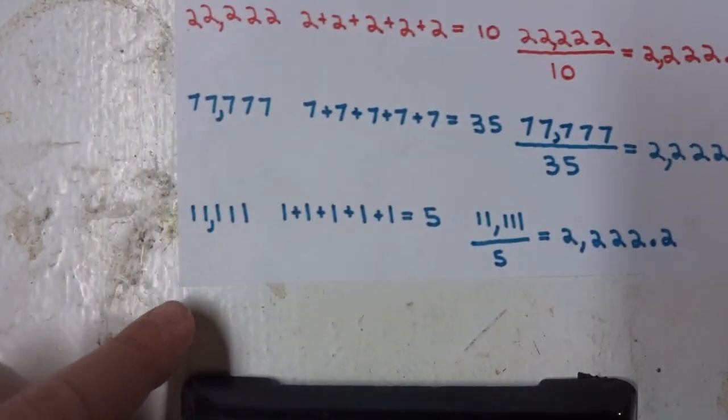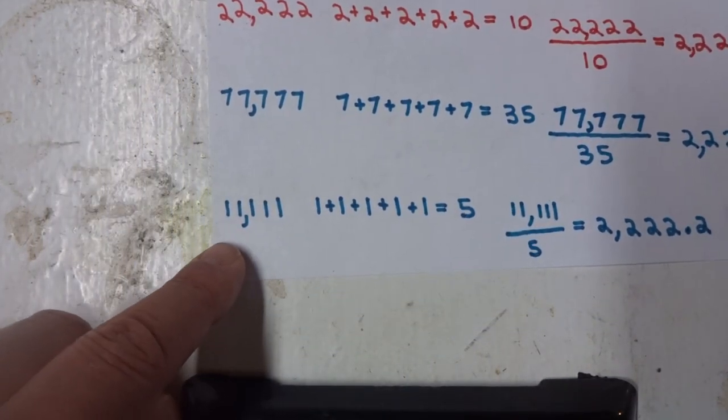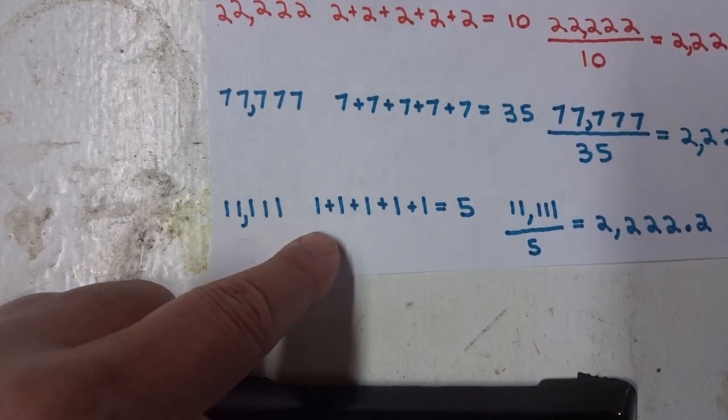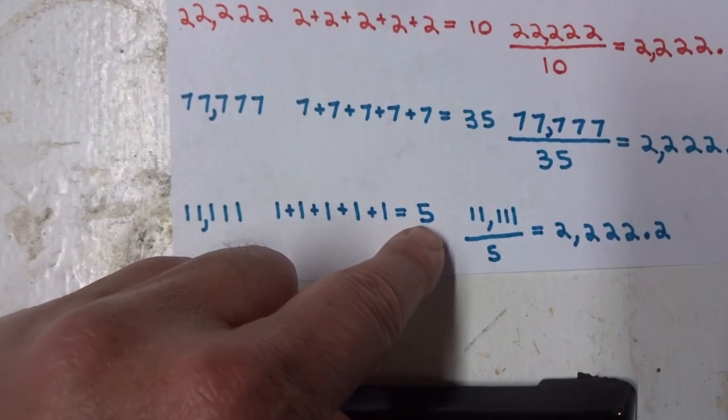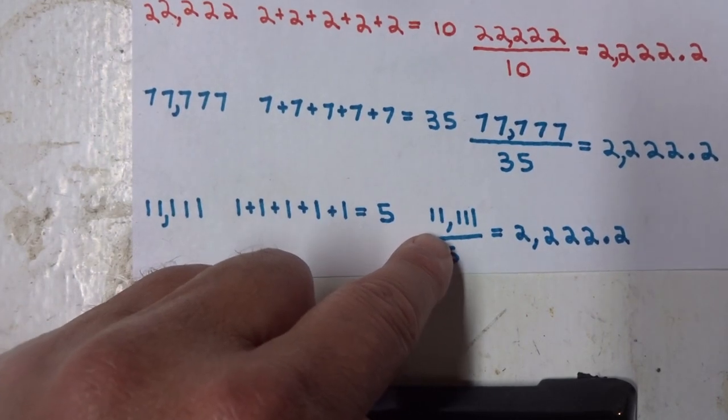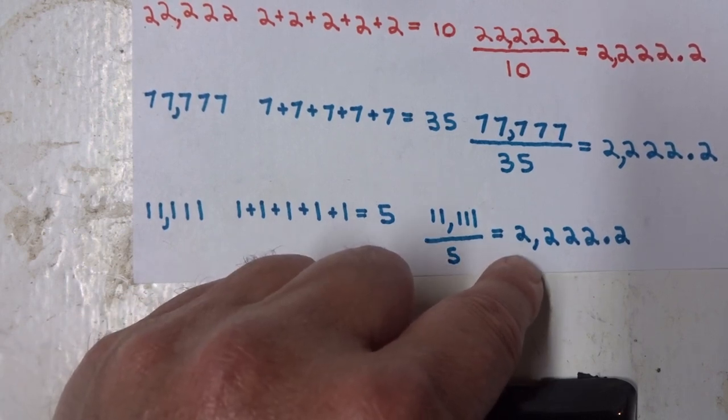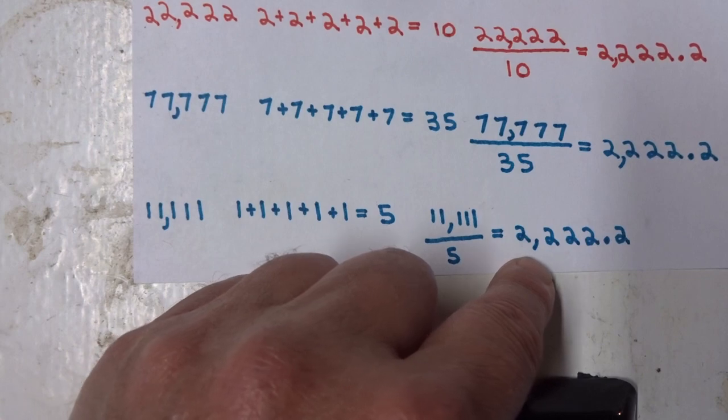And even if we try it with all ones. 11,111. Add the ones together, and we get 5. 11,111 divided by 5 equals the same number, 2,222.2.